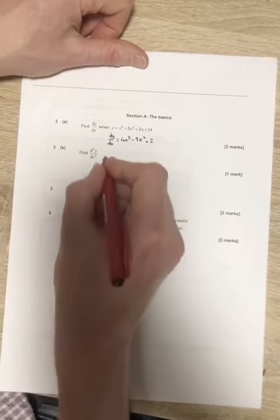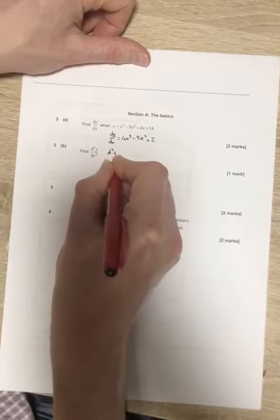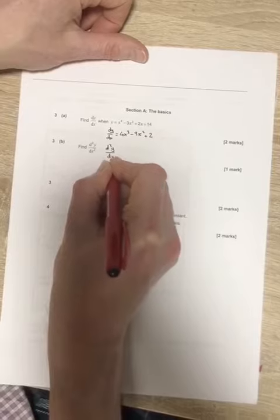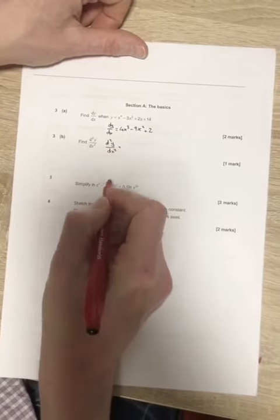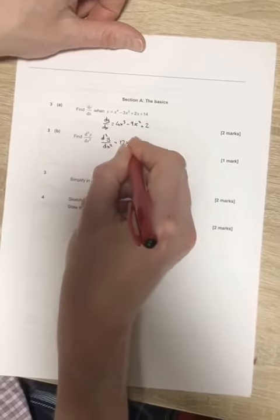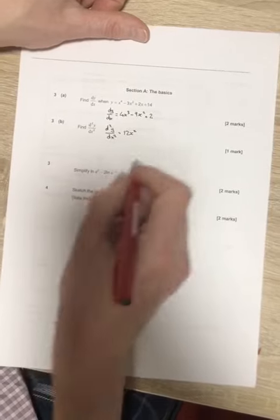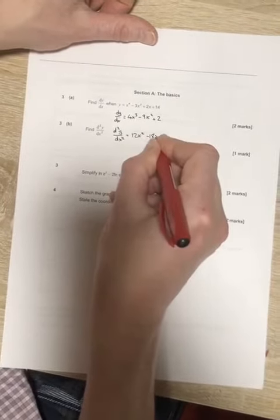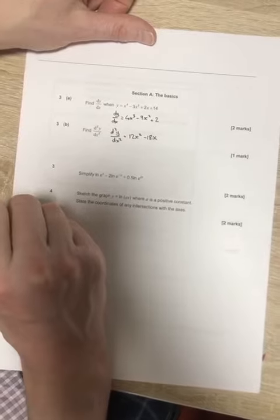Second differential, we apply the same process again. d2y by dx squared equals, 3 times 4 is 12, so 12x squared, 2 times 9 is 18, 18x and the 2 disappears. That's it.